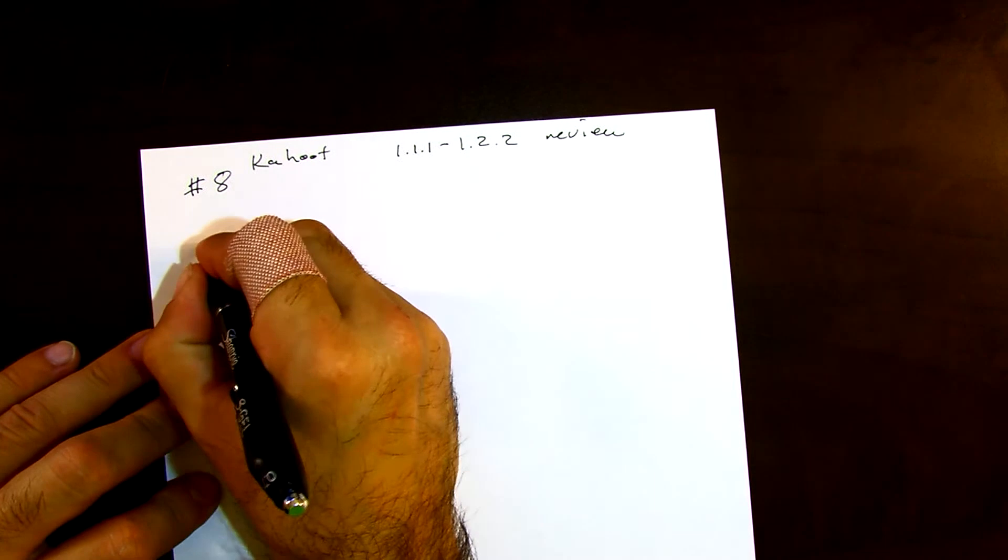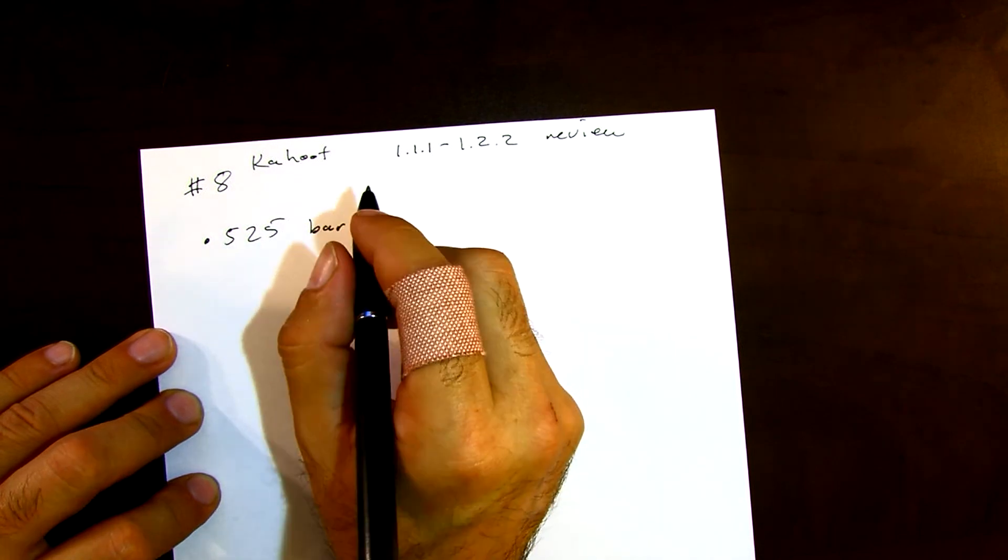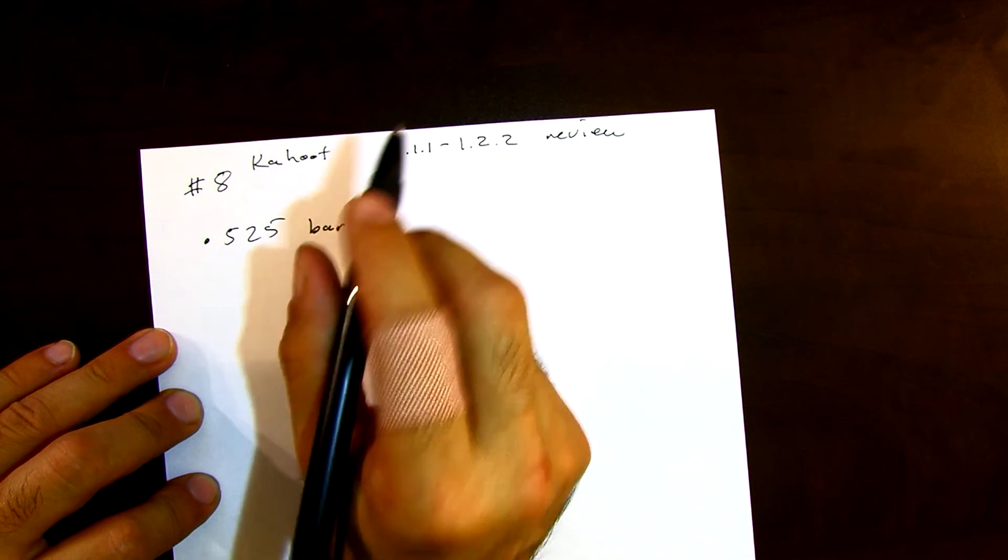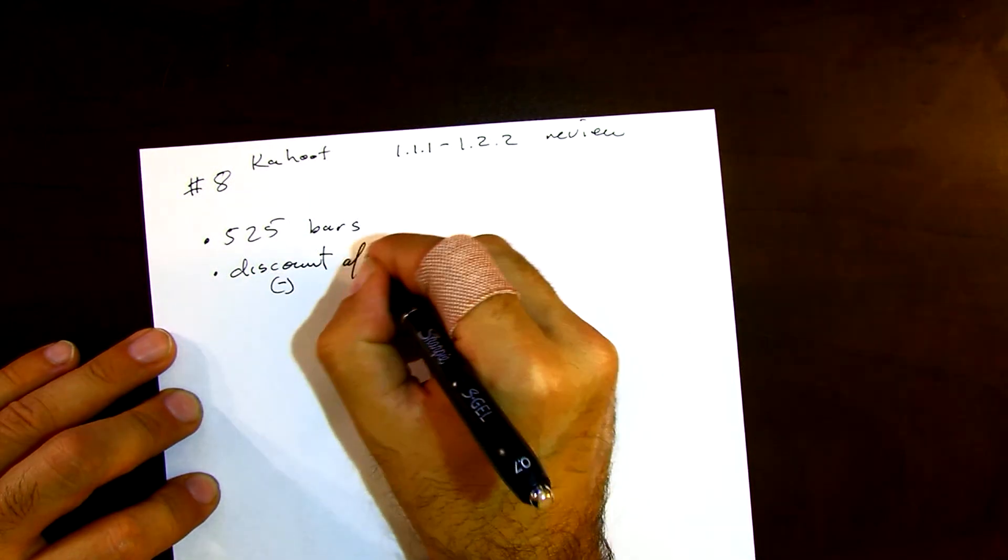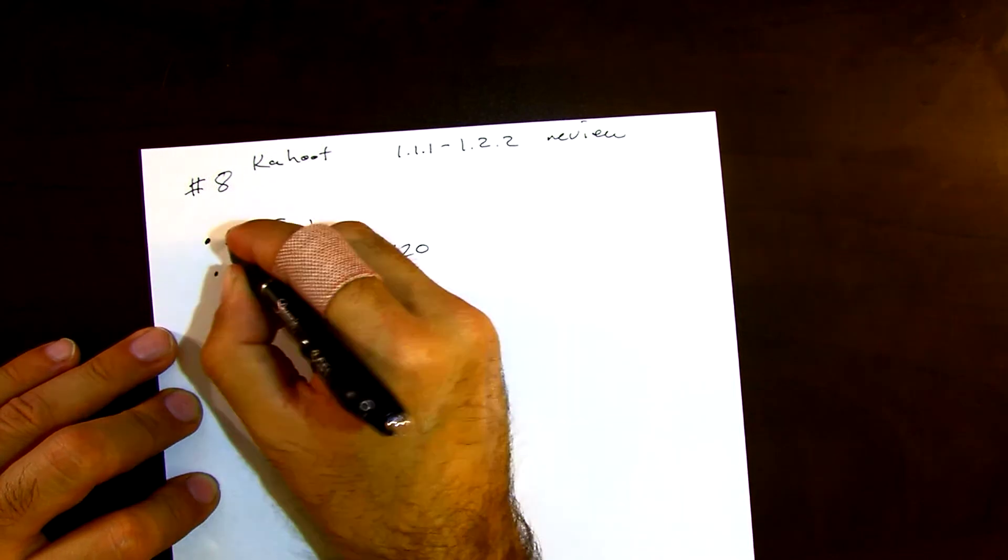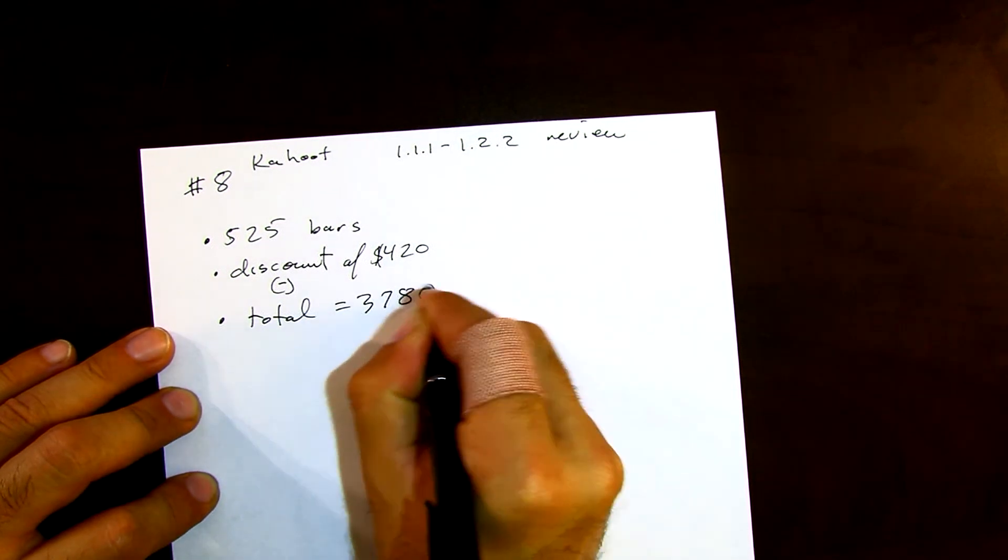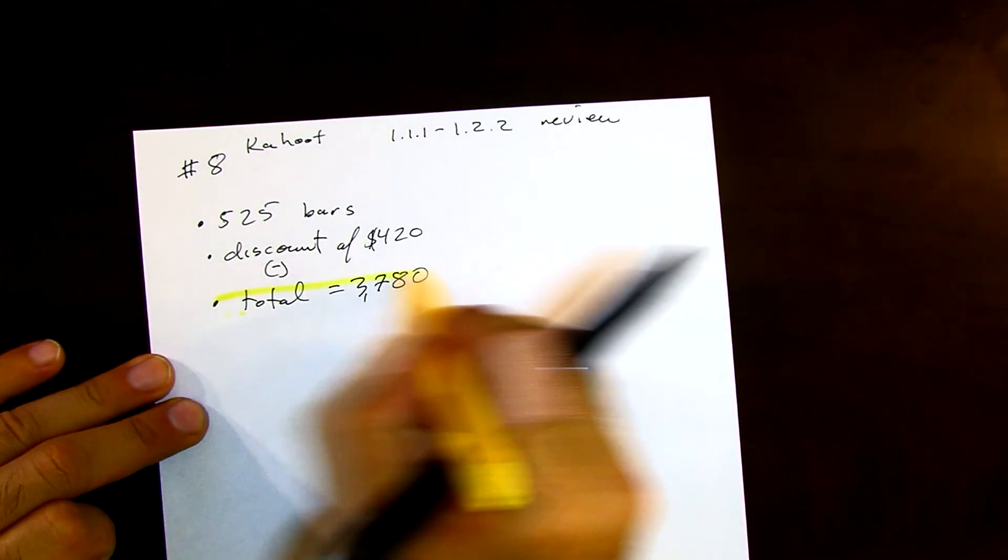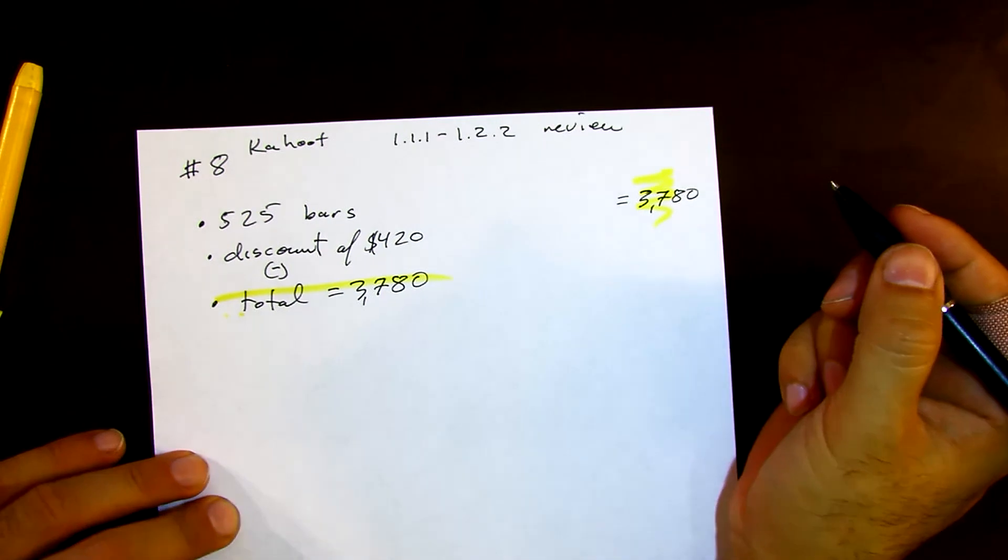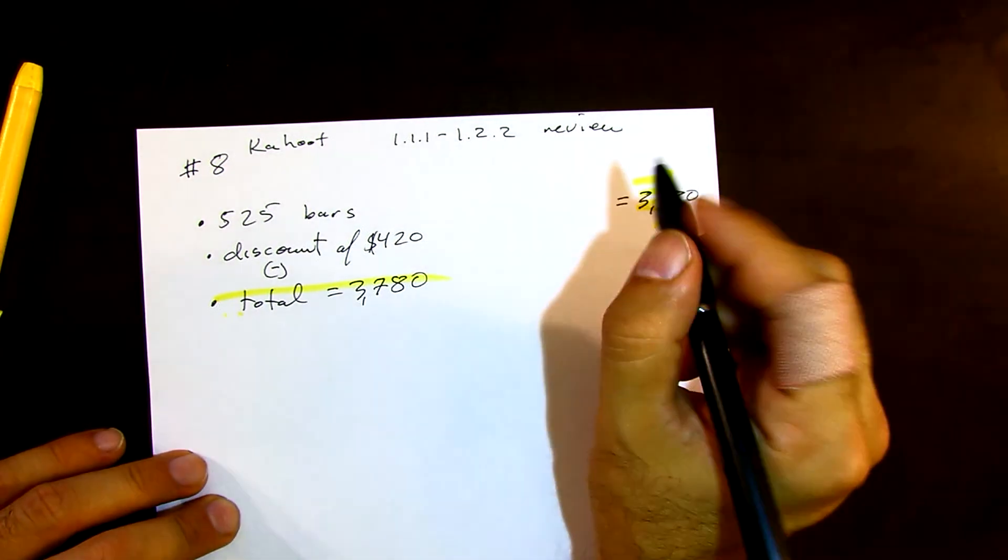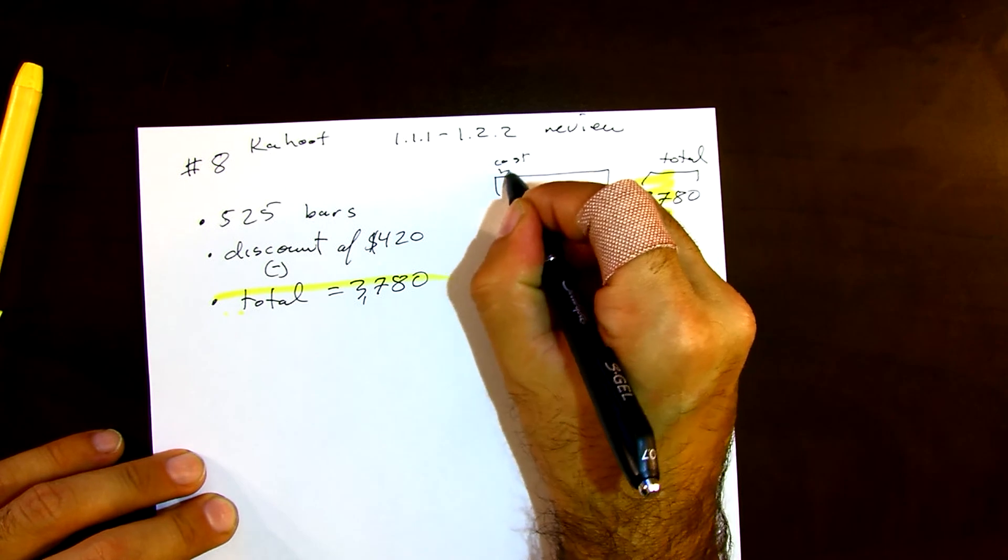It's number eight in the kahoot, from the 1.11 to 1.22 review. A builder contractor buys 525 bars. Because he buys more than 500, the wholesaler gives him a discount of $420. The total price is $3,780. The total always goes on the right side, so we can put an equal sign.